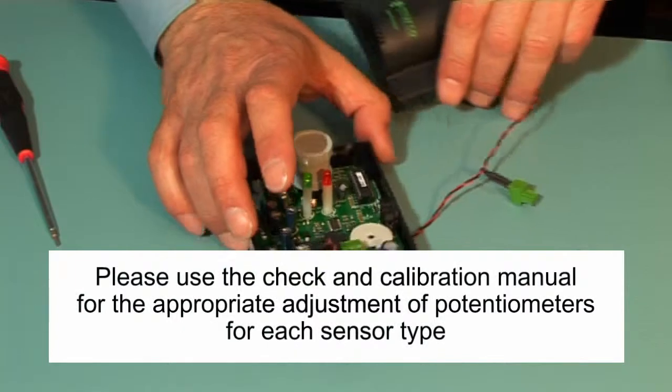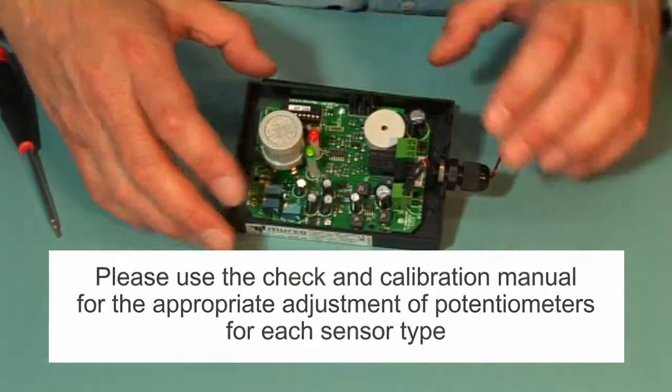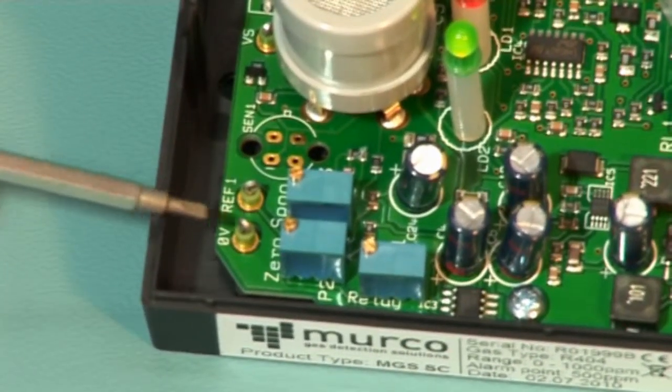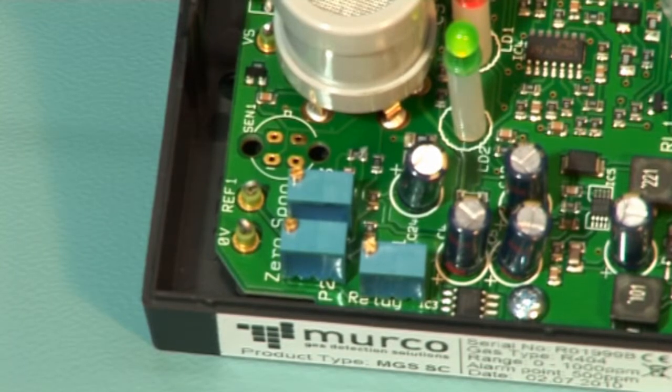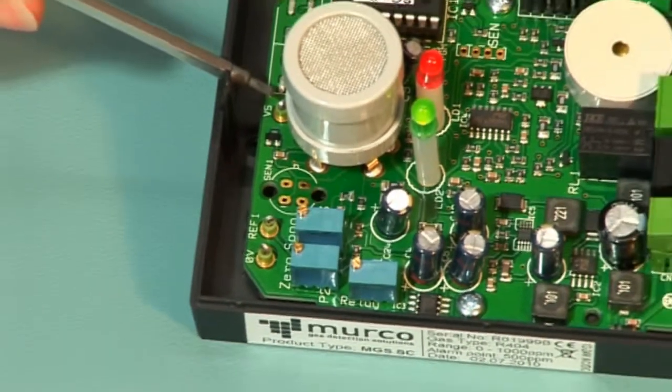Please use the check and calibration manual for the appropriate adjustment of potentiometers for each sensor type. The zero volt test point is marked here on the board as 0V. The sensor voltage output in clean air is indicated by VS.